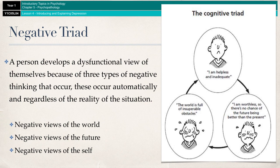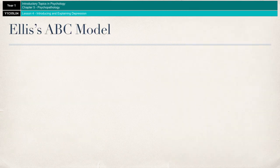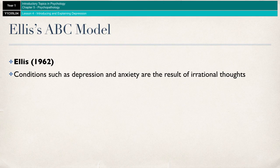The second explanation is Ellis' ABC model. Ellis took a slightly different approach, starting by explaining what's required for good mental health. According to Ellis, good mental health is the result of rational thinking, which allows people to be happy and pain-free, whereas depression is the result of irrational thinking, which prevents us from being happy and pain-free. Conditions such as depression and anxiety are therefore the result of irrational thoughts.